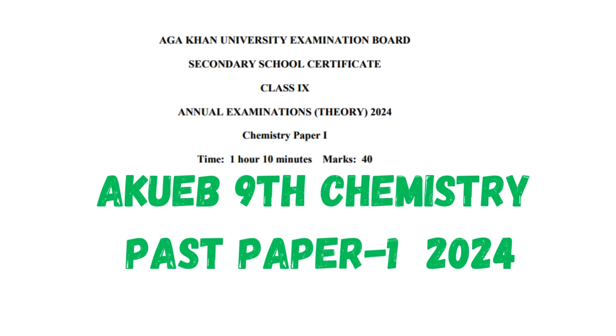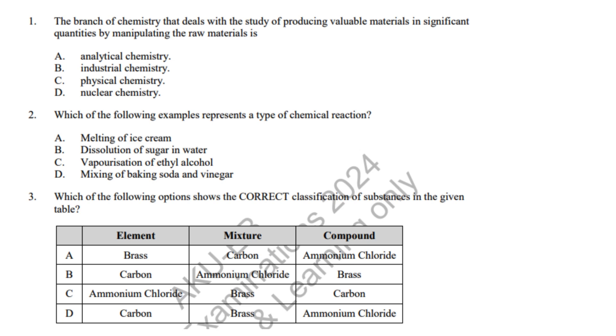Hello, class 9th students. In this video, we will go through the Aga Khan Board class 9th Chemistry Paper 1. Let's start. Question 1: Industrial chemistry focuses on large-scale production of useful materials. Correct answer: B, Industrial chemistry.